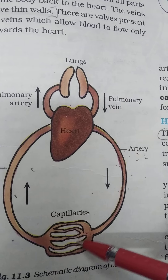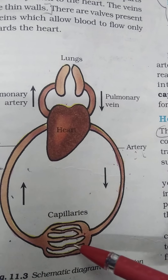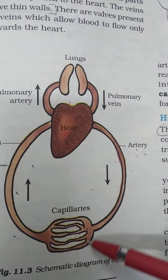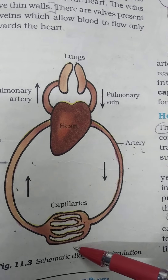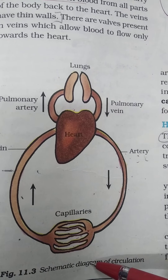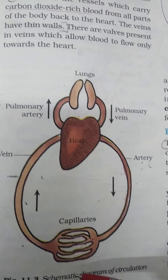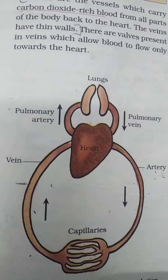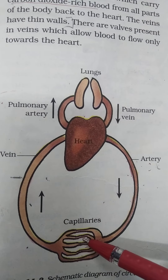Next are capillaries. When arteries divide into branches which again divide into smaller branches, those are called capillaries. Capillaries join together to form larger blood vessels called veins. The exchange of materials takes place through the thin walls of the capillaries.